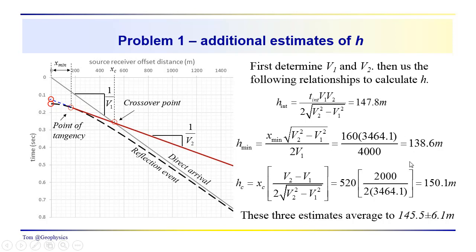So, these three estimates, they average to 145.5 plus or minus 6.1 meters. This is just a standard deviation. And this might be a good way to represent your estimate. If somebody asked you, you collected some data, they wanted to know what the thickness of the layer was, and you used only one approach, you could get 147.8, you could get 138.6. So, I would recommend that if you can find the data points, to use more than one approach to estimate the thickness of the layer, because you do have some error.